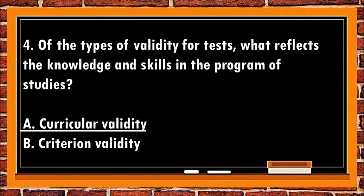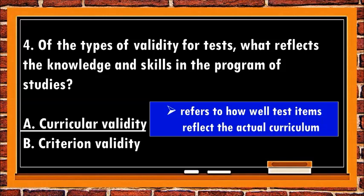The correct answer is a. Curricular validity. Curricular validity refers to how well test items reflect the actual curriculum. For example, a test is a measure of what's on the curriculum or the program of studies.